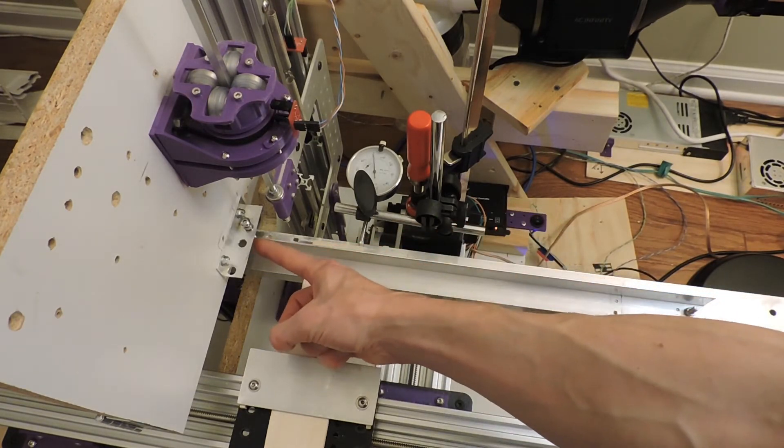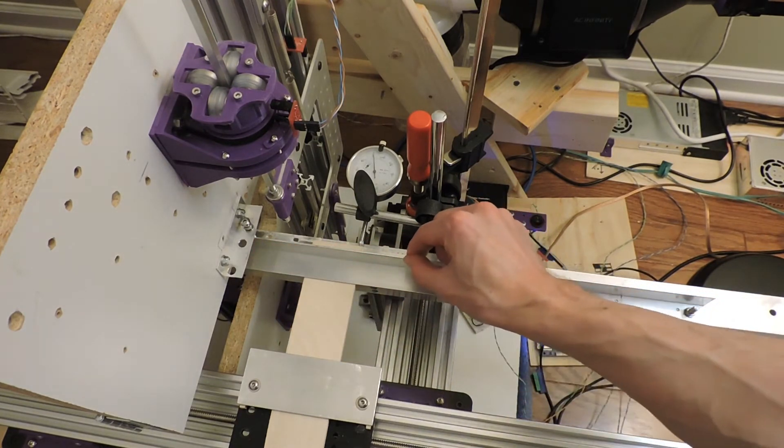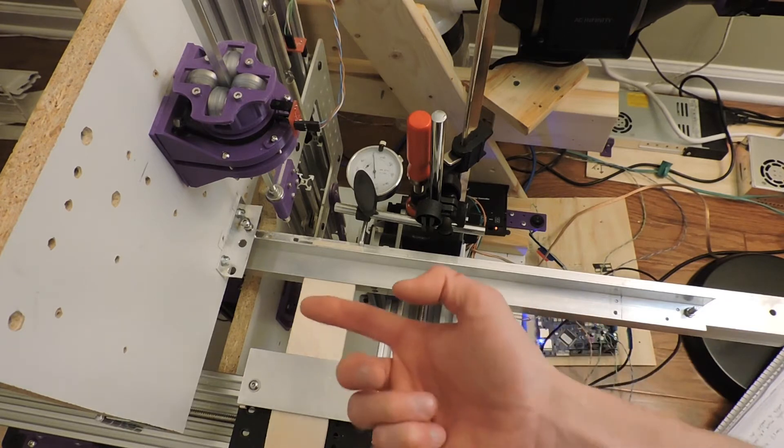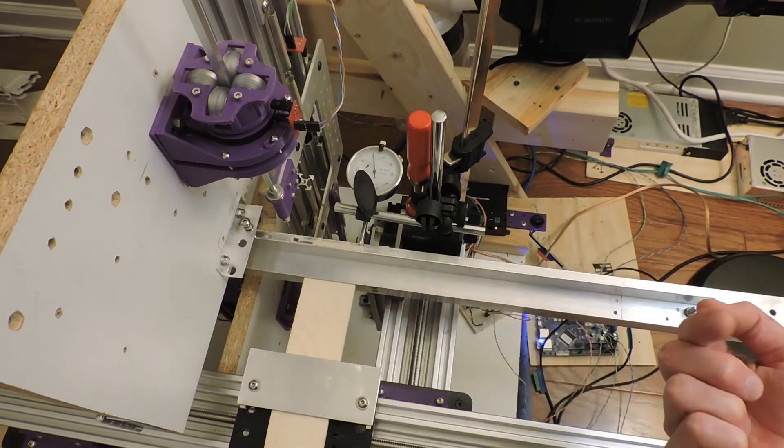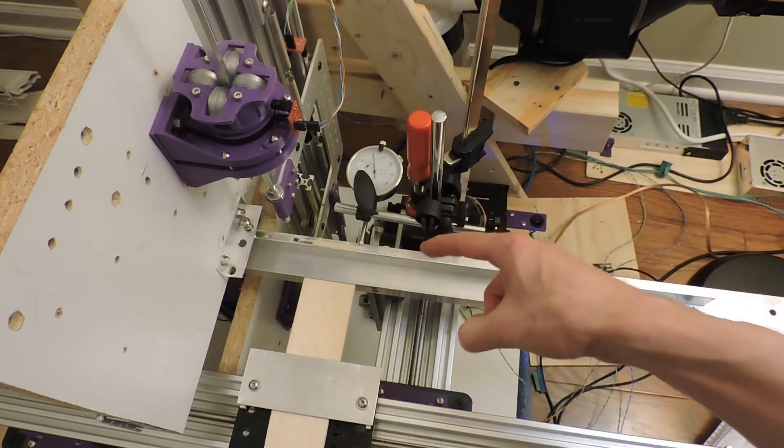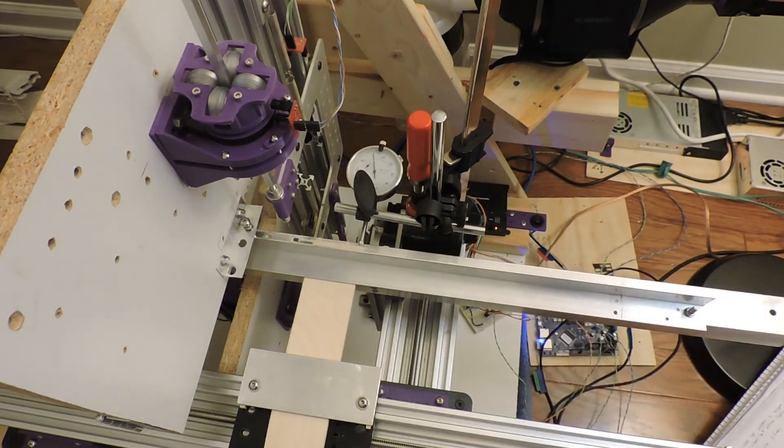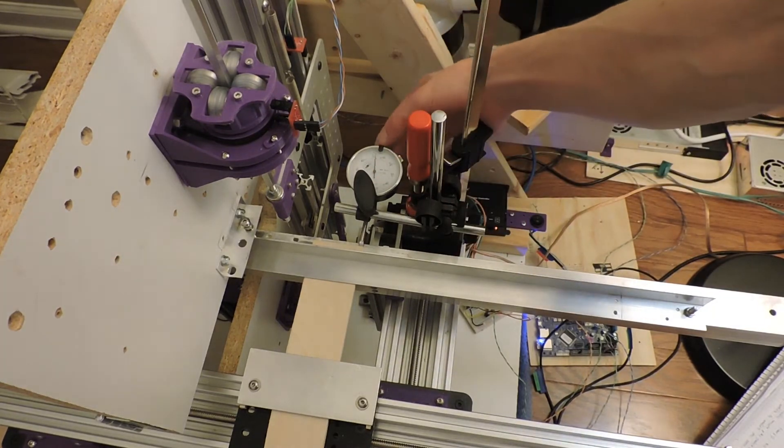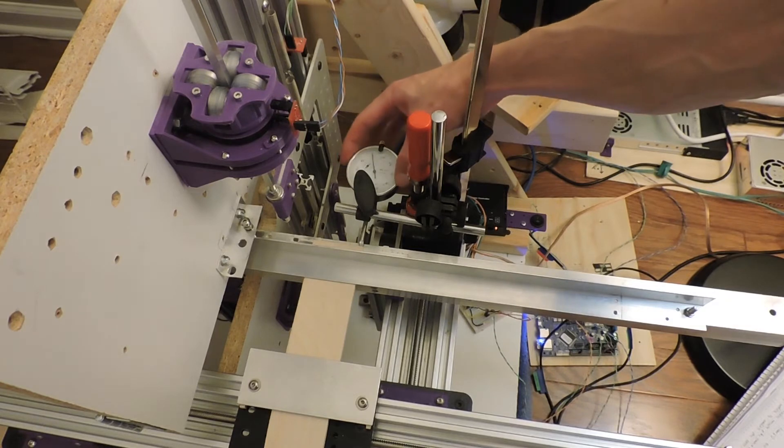And so the most reliable way I found to do this was to just take a horizontal cut off of a piece of wood and then sweep it with a dial indicator to measure the angle that you cut.